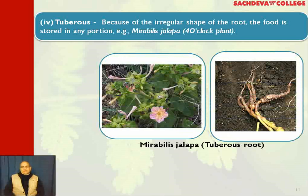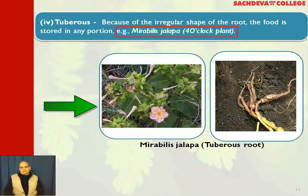Tuberous roots: because of the irregular shape of the root, food is stored in any portion. The plant shown is Mirabilis jalapa, commonly called the four o'clock plant, which has tuberous roots. If you remember, this plant in genetics was the first example used to demonstrate incomplete dominance.